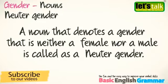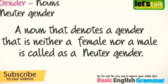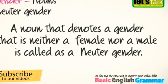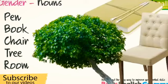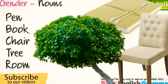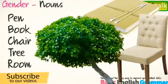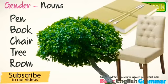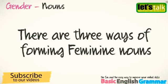Next is neuter gender. A noun that denotes a gender that is neither a female nor a male is called a neuter gender. For example: pen, book, chair, tree, room. These are neuter genders.